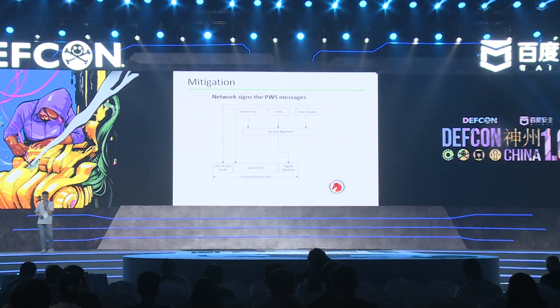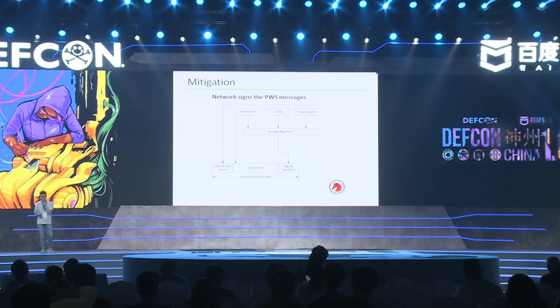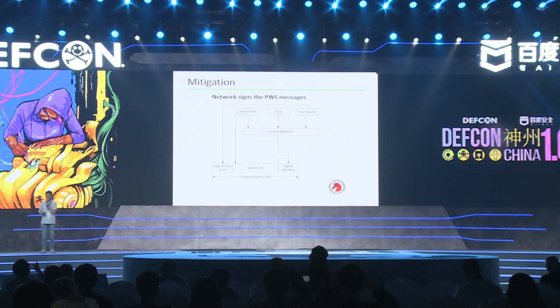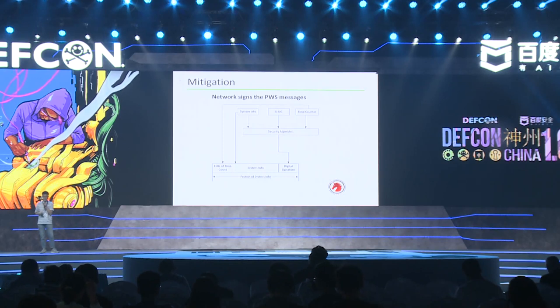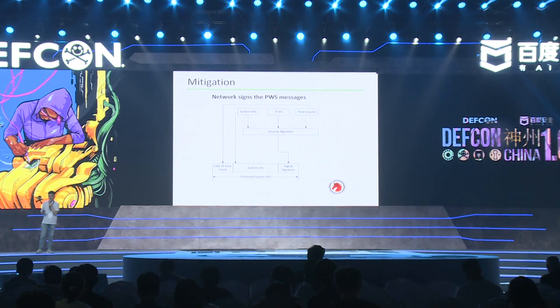Let's see what we can do to prevent fake warning messages. We could use asymmetric encryption to protect them. The network could use a private key to append a digital signature to the warning message, and the mobile phone could use the public key to verify the authenticity of the network and the warning message. This may prevent fake warning messages, and I hope public warning messages will no longer be transmitted in clear text.